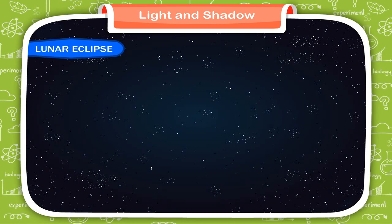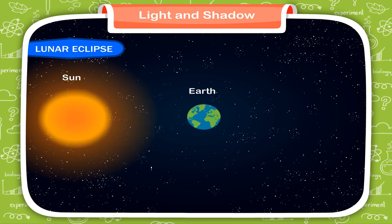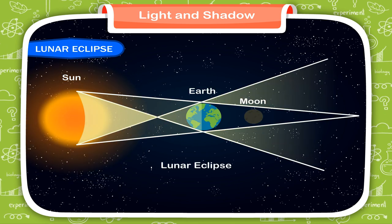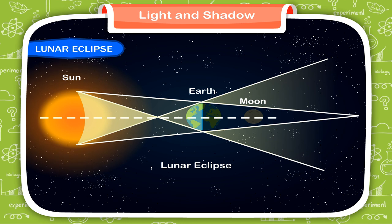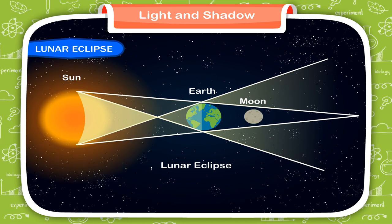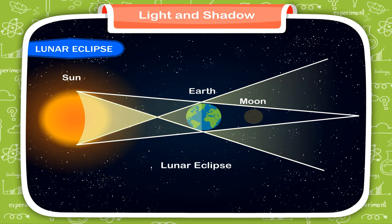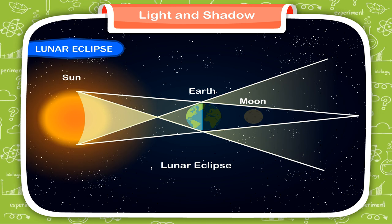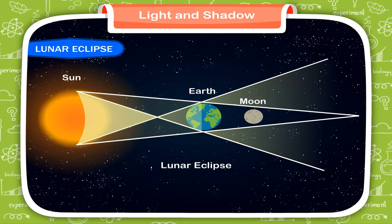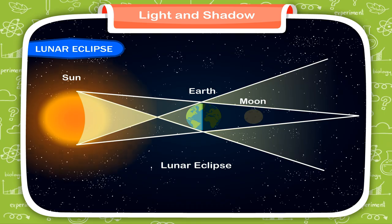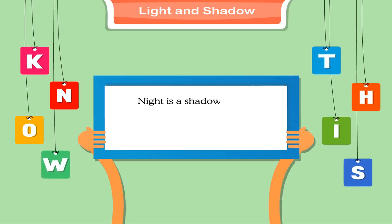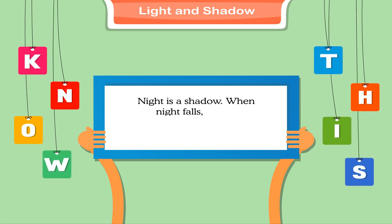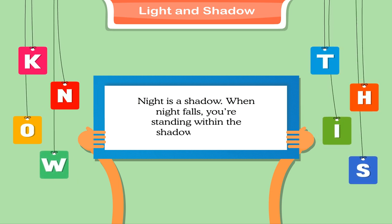Lunar Eclipse. In a lunar eclipse, when the sun, the earth and the moon come in a straight line with the earth in the middle, the shadow of the earth falls on the moon. When a lunar eclipse occurs, the moon's bright side faces the earth. That is, a lunar eclipse occurs on a full moon day. Know this: Night is a shadow. When night falls, you are standing within the shadow of the earth.